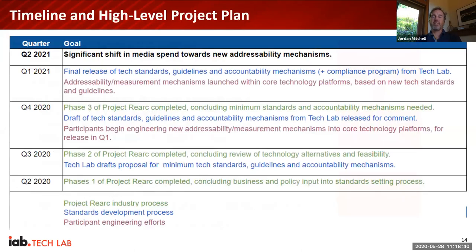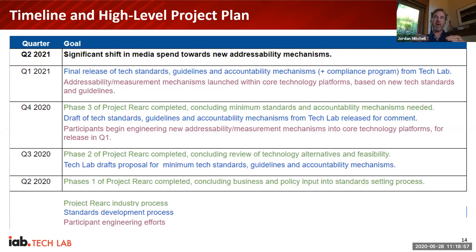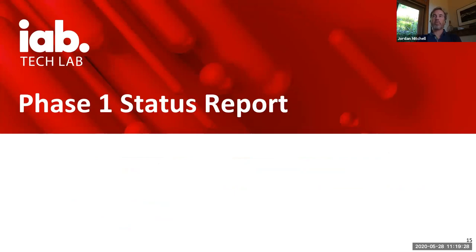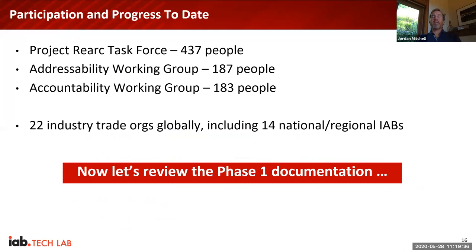From a timeline perspective, we're focused on seeing a significant shift in media spend toward new addressability mechanisms no later than this time next year. Working backwards, Phase 1 is this quarter, Phase 2 is Q3, and Phase 3 is Q4. By then we hope to have drafted some standards and have many participants engineering new addressability mechanisms into their core technology platforms for release and beta usage. We started about five weeks ago and now have 437 people on the task force and around 180 involved in the member-only working groups.